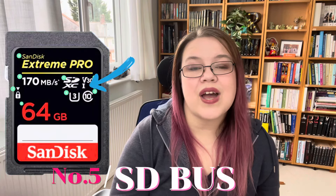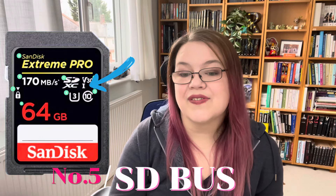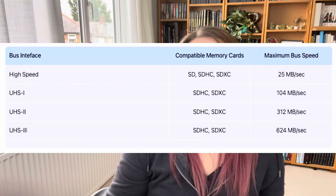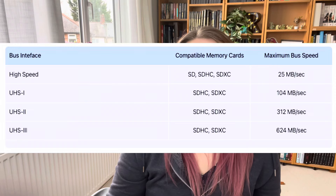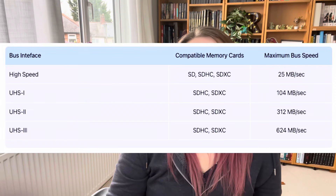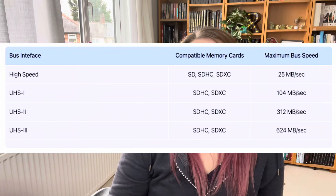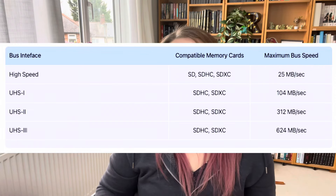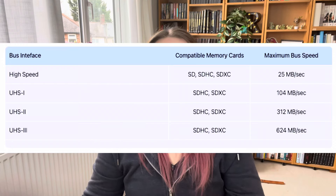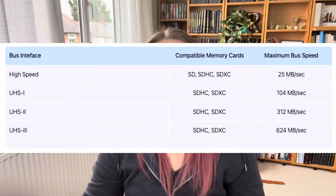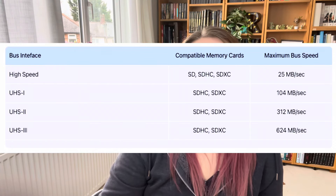Then you have your SD Bus Interface Speed, which indicates the maximum data transfer speed between your memory card and the device. Your standard is up to around 12.5 megabytes per second, whereas UHS-1, 2, and 3 give you 100, 300 megabytes per second and beyond. It really does make a difference.